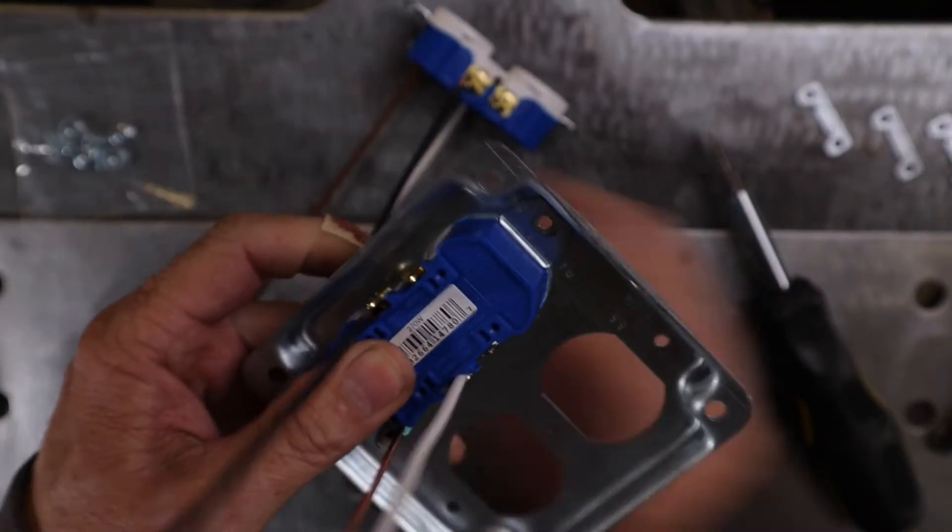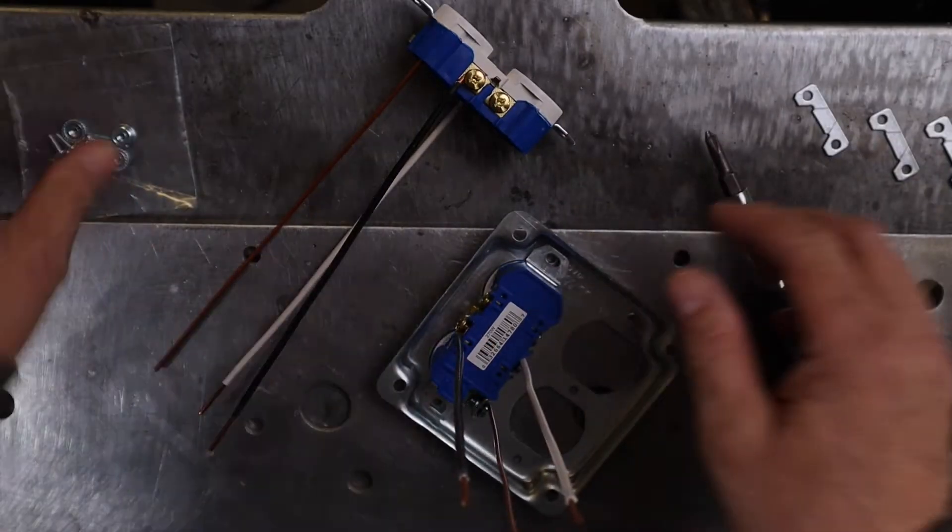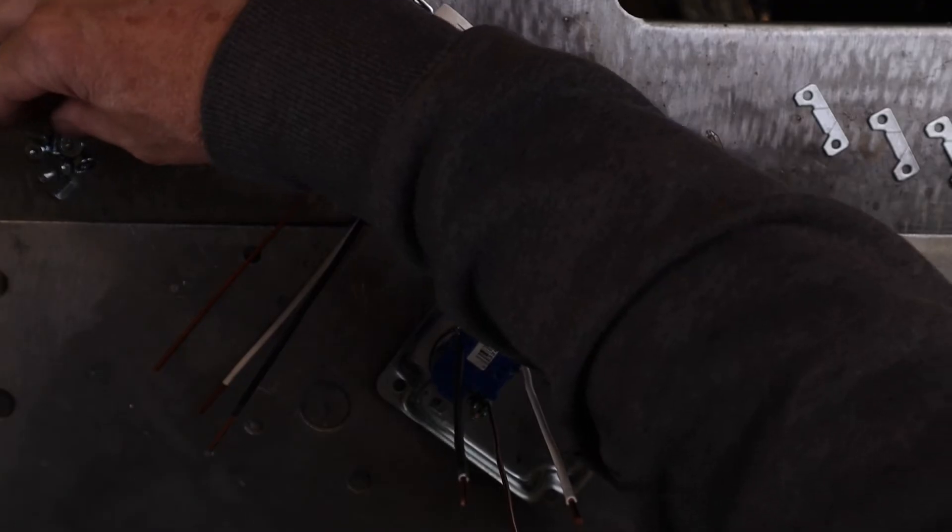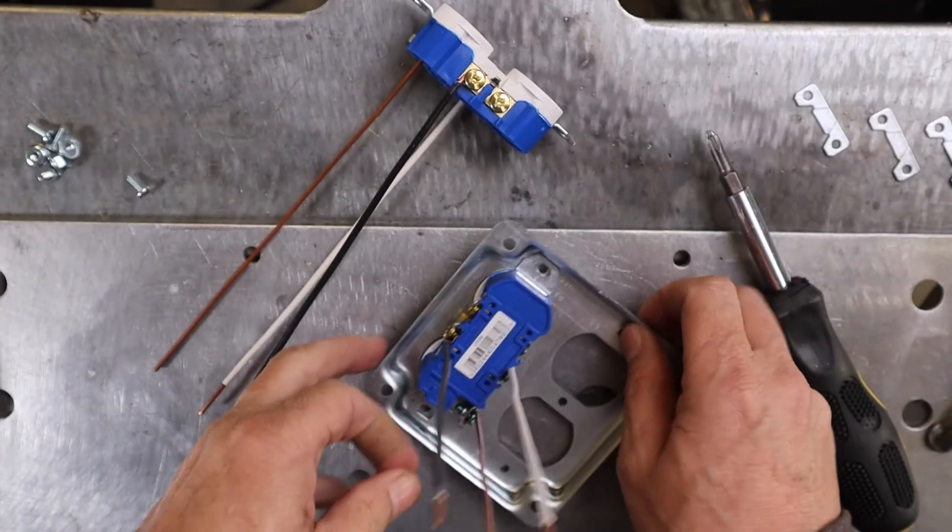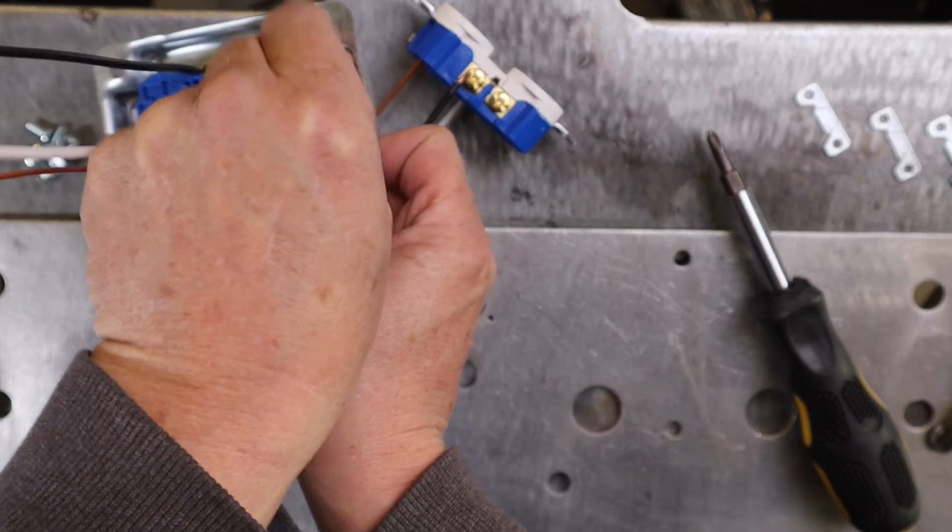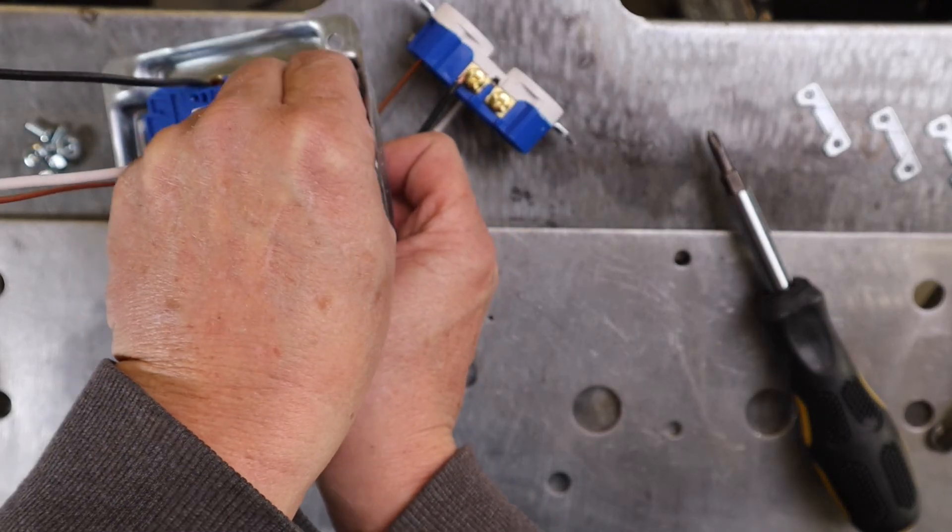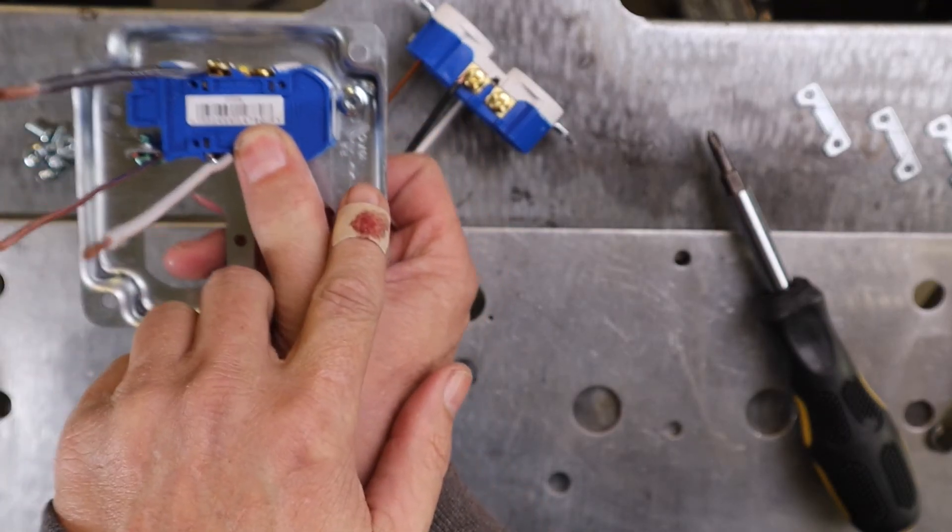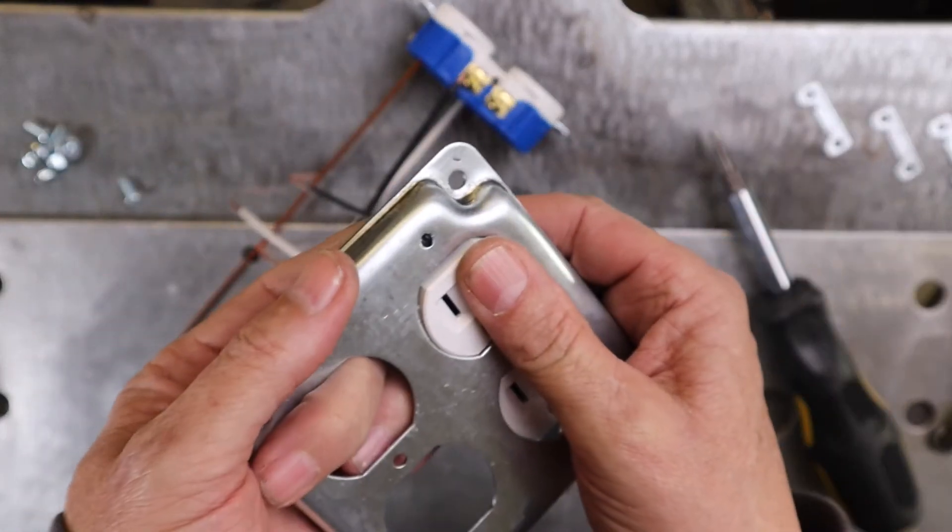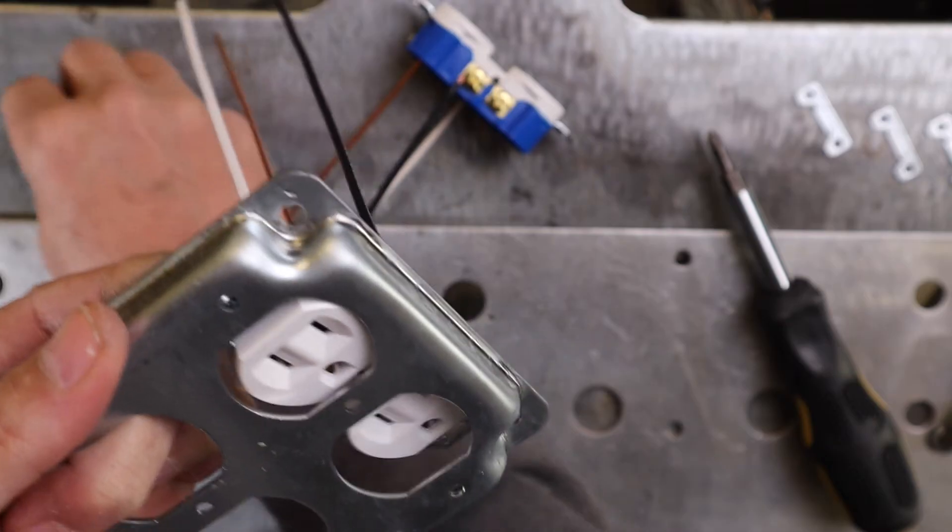Then they give you nuts and bolts, four of each. And I'll just take and put the nut on the back side and hold it with my finger. Just set it on there like that. Take your finger and line up the hole and put a bolt in it.